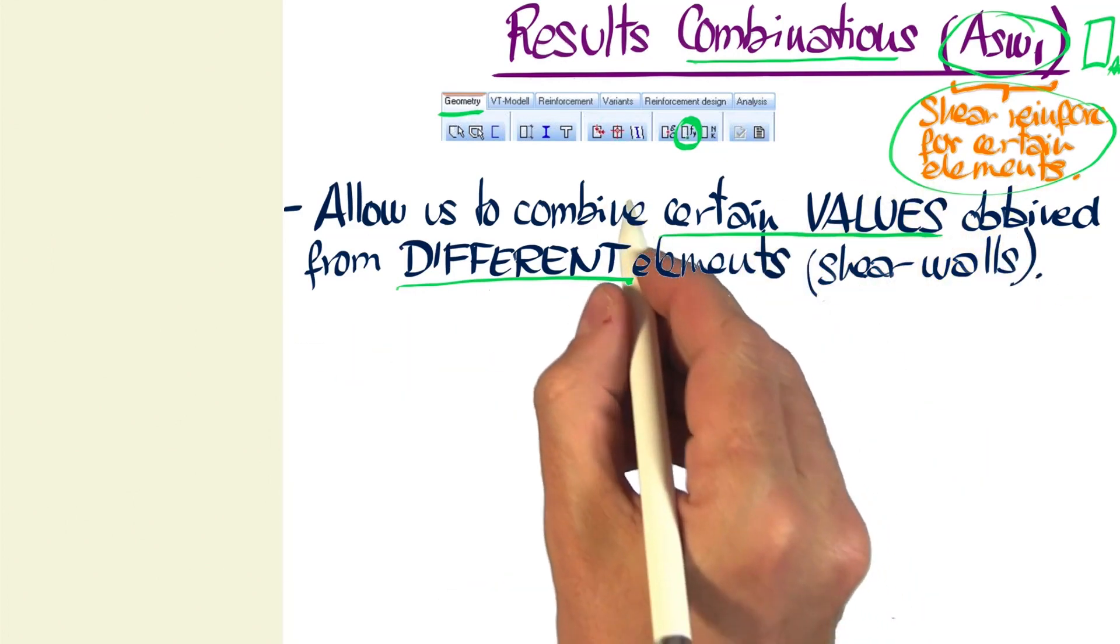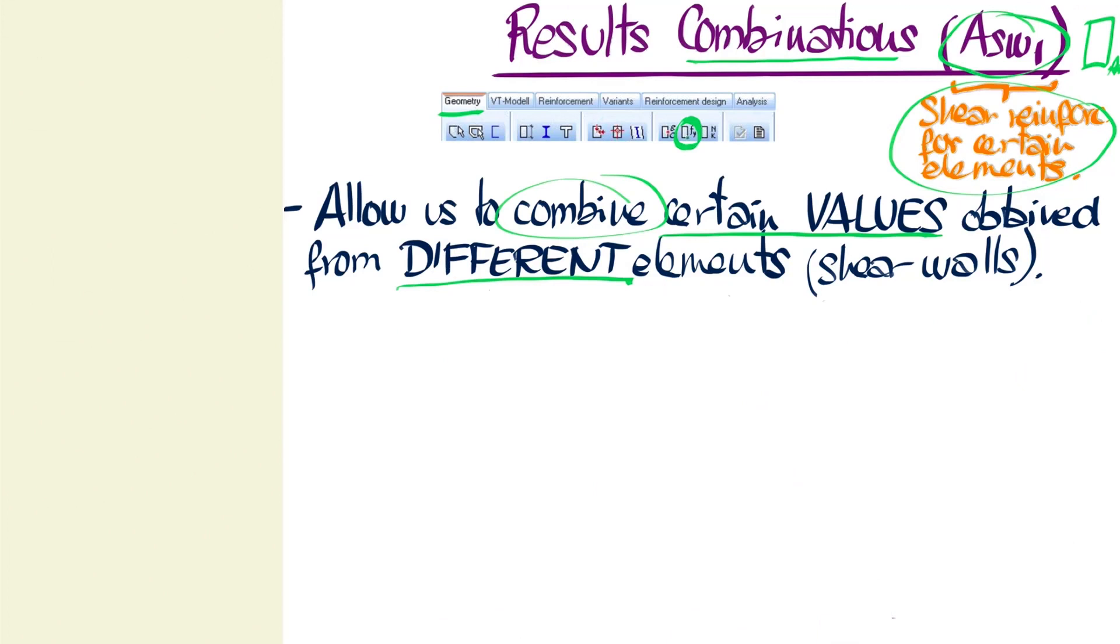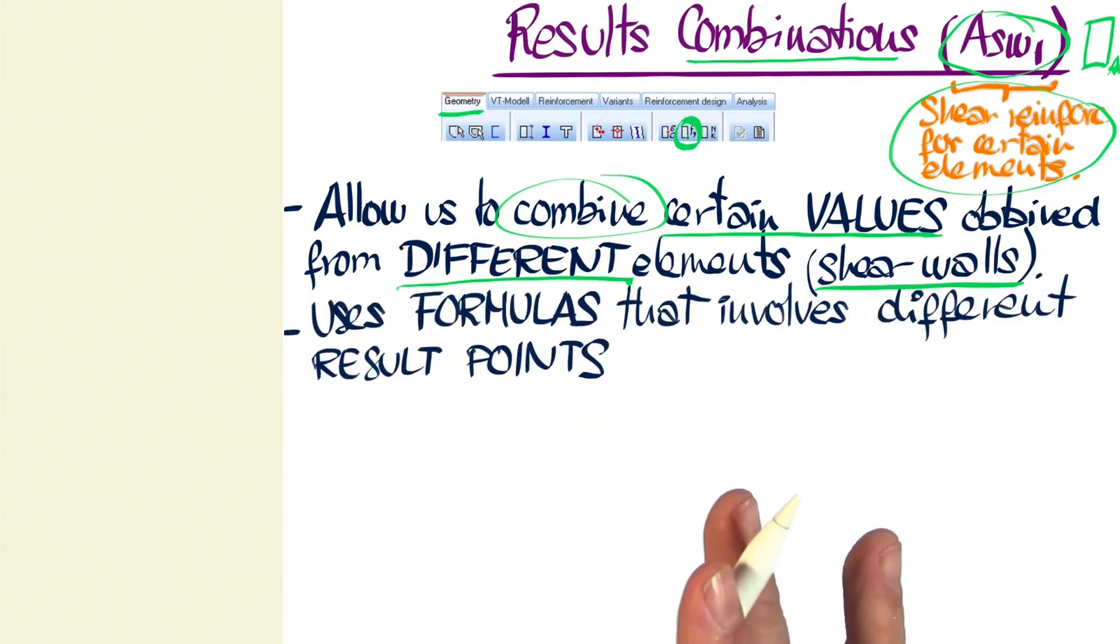So, we can combine those values obtained in the result points with values obtained from different elements of the cross-section, like, for example, shear walls. And this can be done using the formulas we'll see in just a moment.